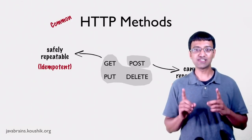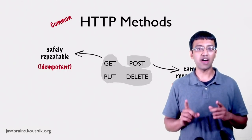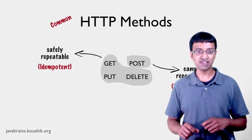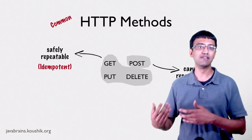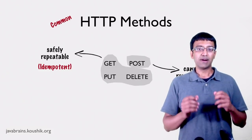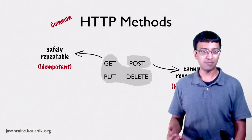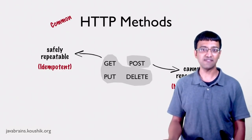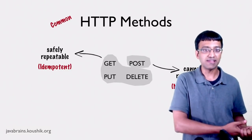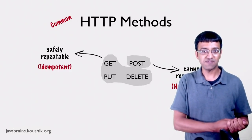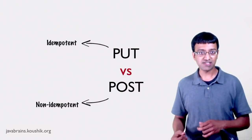Resource creation should always be via a POST method because resource creation requests are non-idempotent — when you make a resource creation request, you do create a new resource every time. Even if you repeat the same request, you end up with multiple resources created. But updating a resource can be called multiple times safely, deleting a resource can be called multiple times safely, and getting a resource can be called multiple times safely. This is why an update request ideally uses an HTTP PUT method, which is idempotent as per the specification. This is the key difference between PUT and POST.